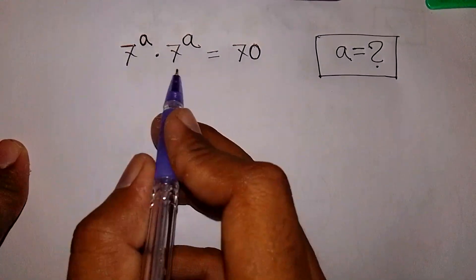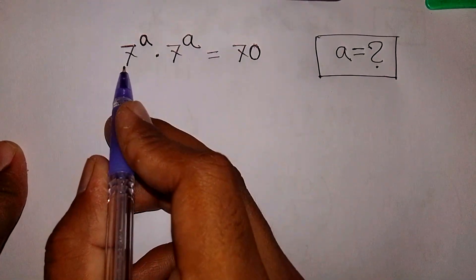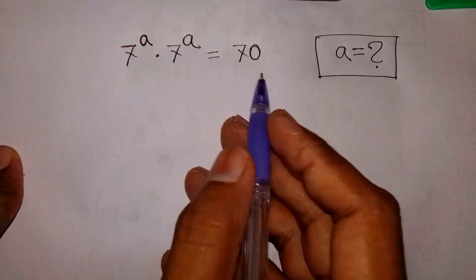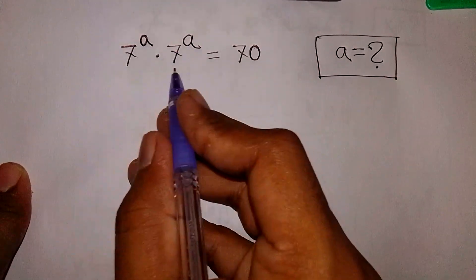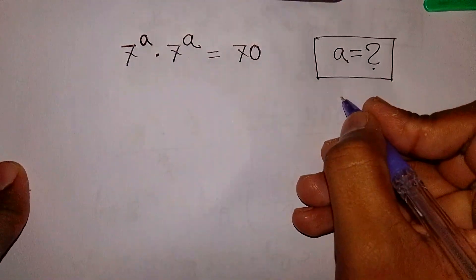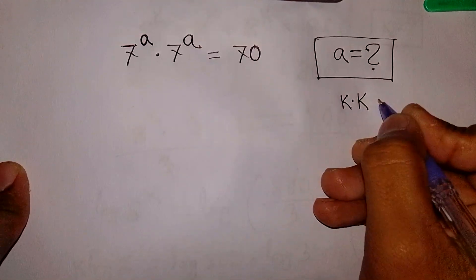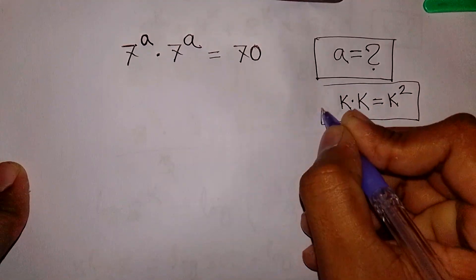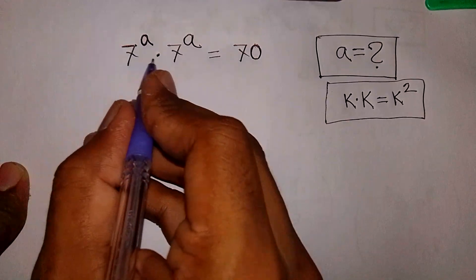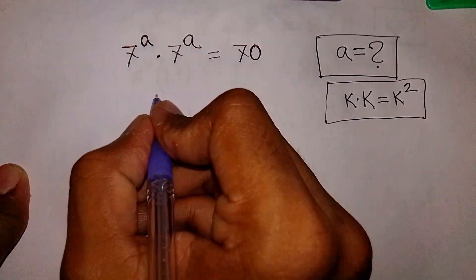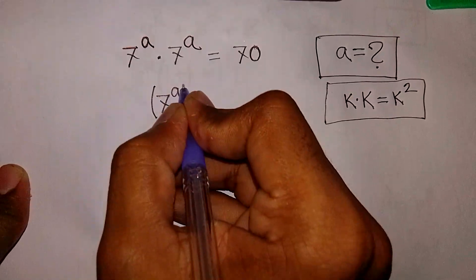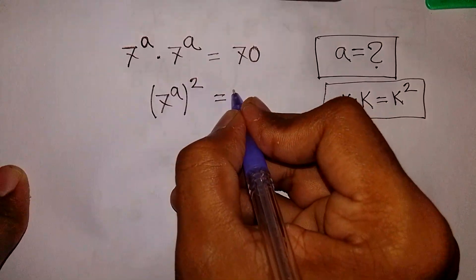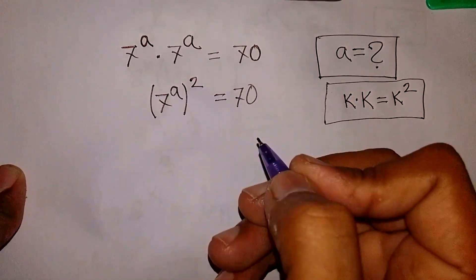Can you solve this nice math Olympiad algebra problem: 7 power a times 7 power a is equal to 70. What is the value of a? First of all, in the form of k times k is equal to k squared, this times this is the same as 7 power a, whole square, is equal to 70.